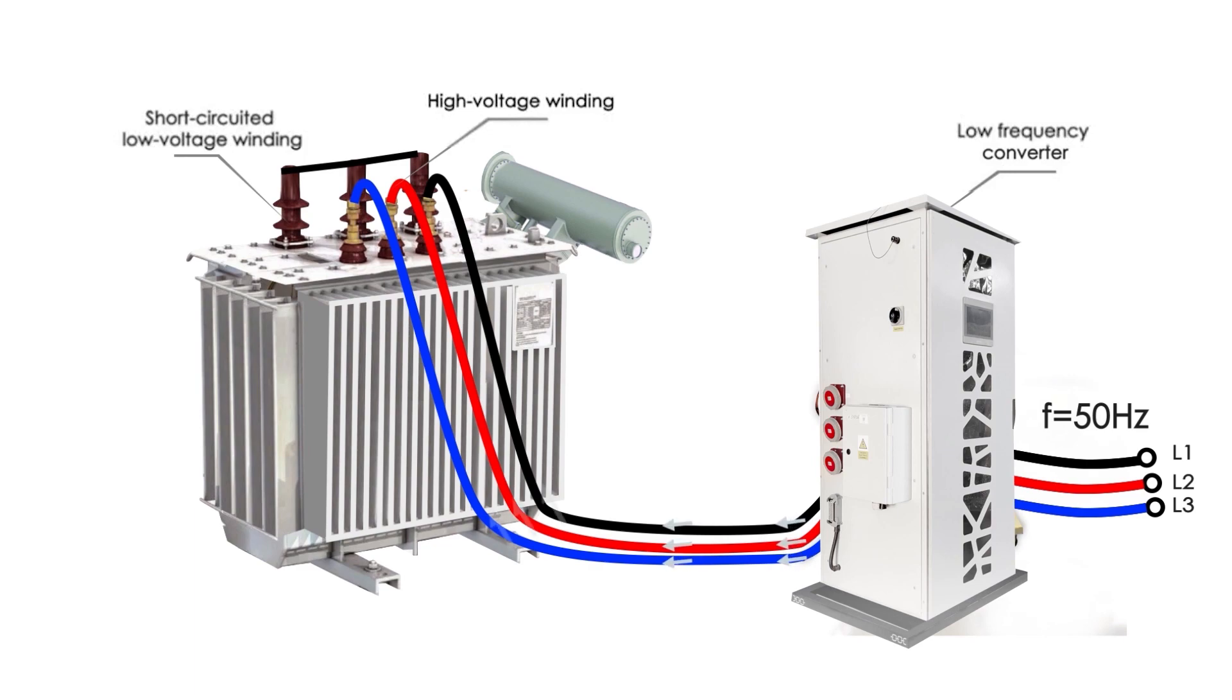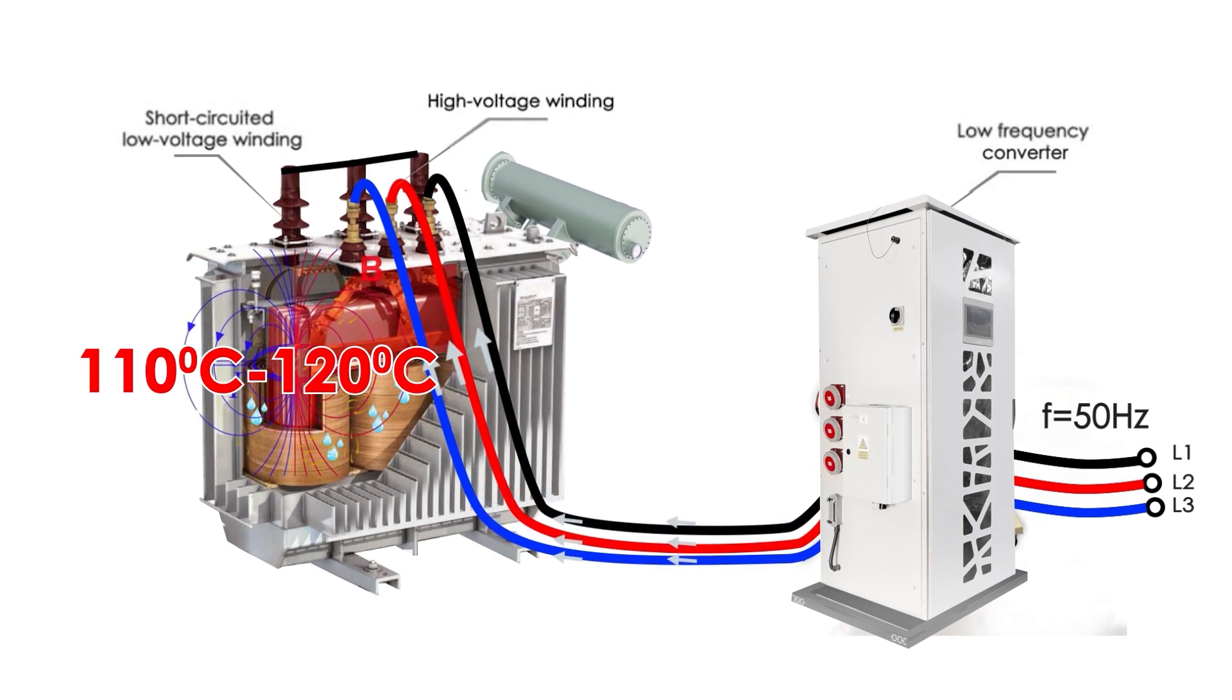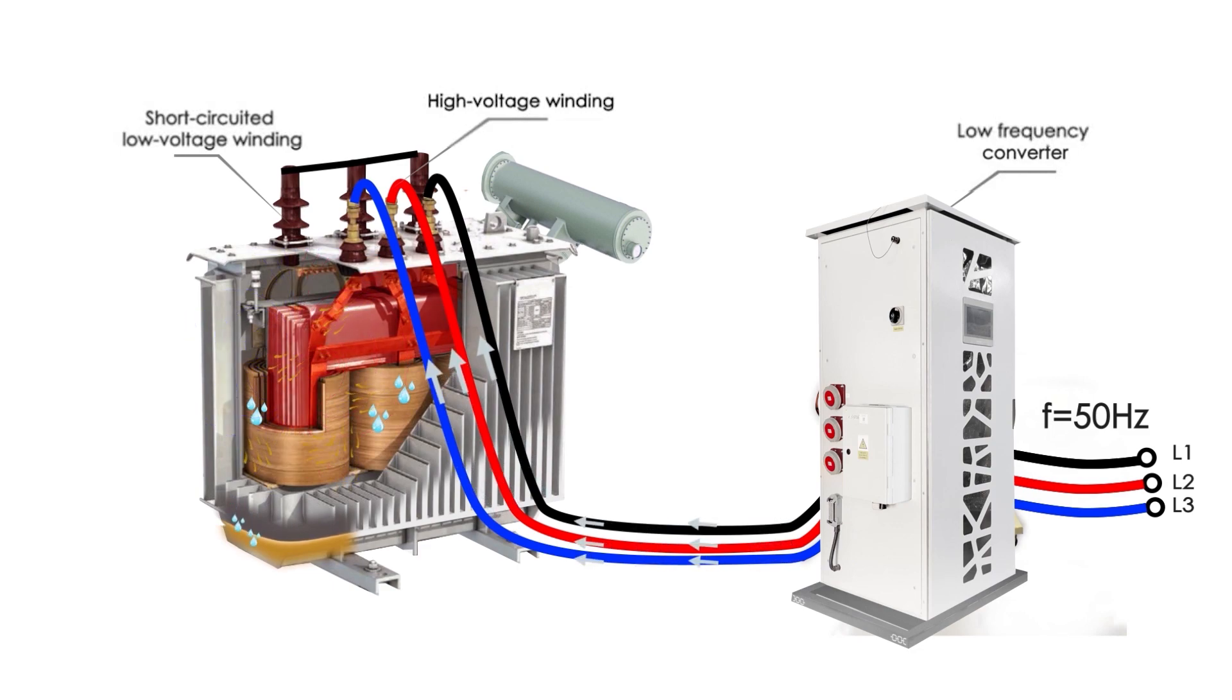To prevent overheating, the temperature of the windings is constantly monitored during the drying process. Due to the fact that when heated by low-frequency currents, the heat sources are the winding itself and the heating comes from the inside, the removal of water from the thickness of the insulation proceeds faster and more completely in comparison with other heating methods.